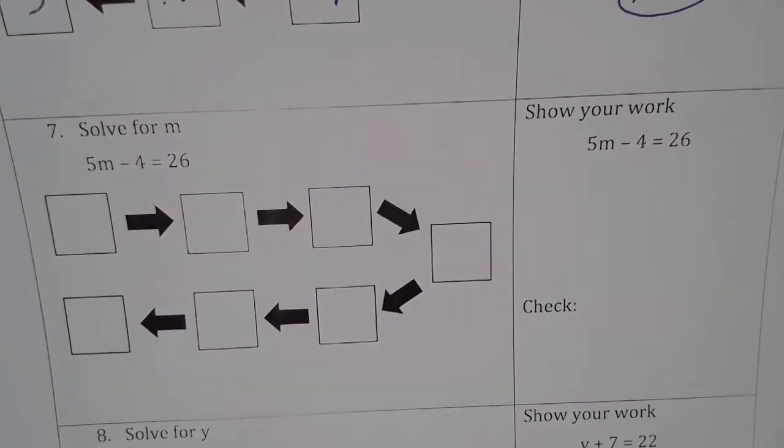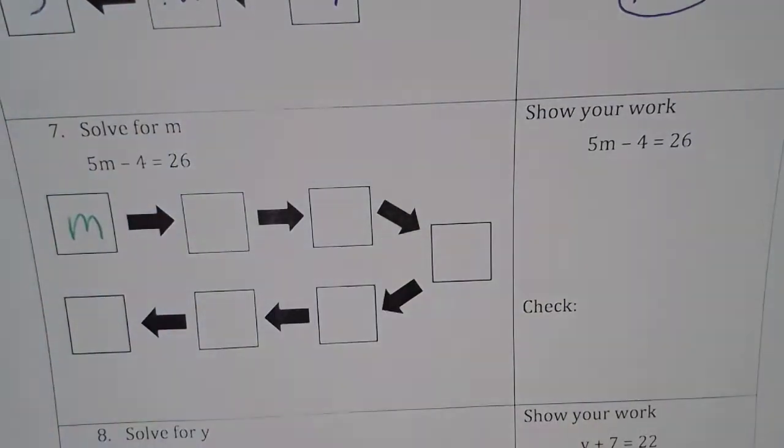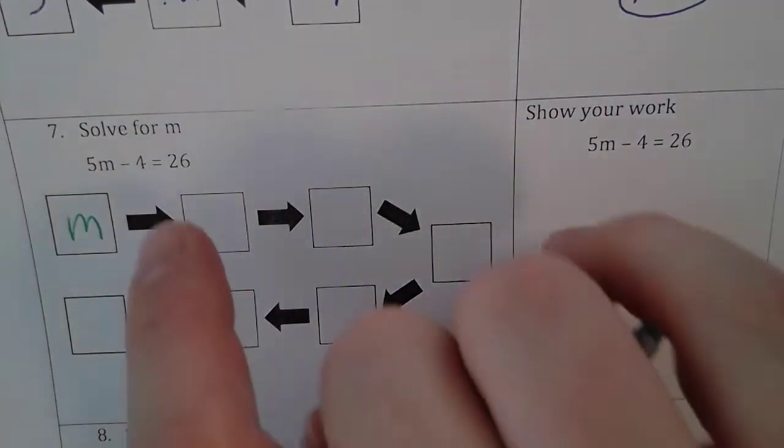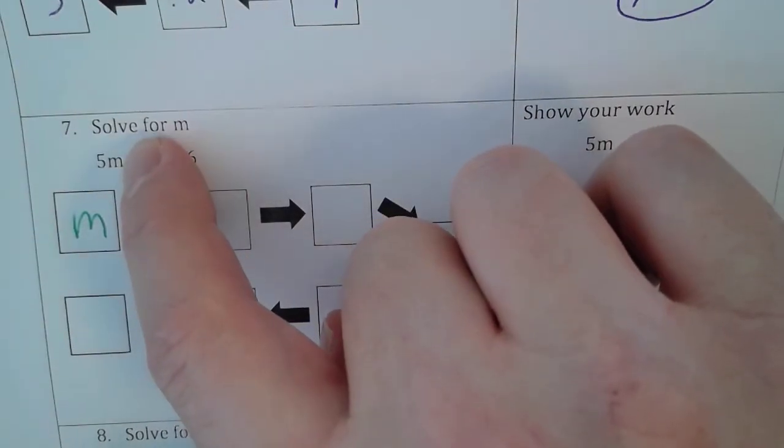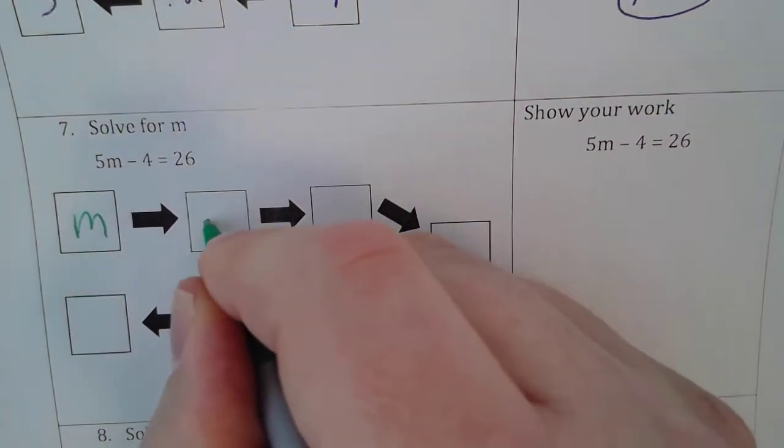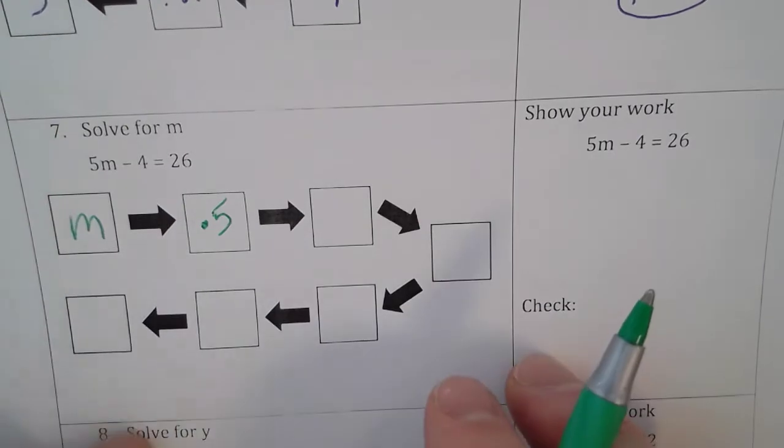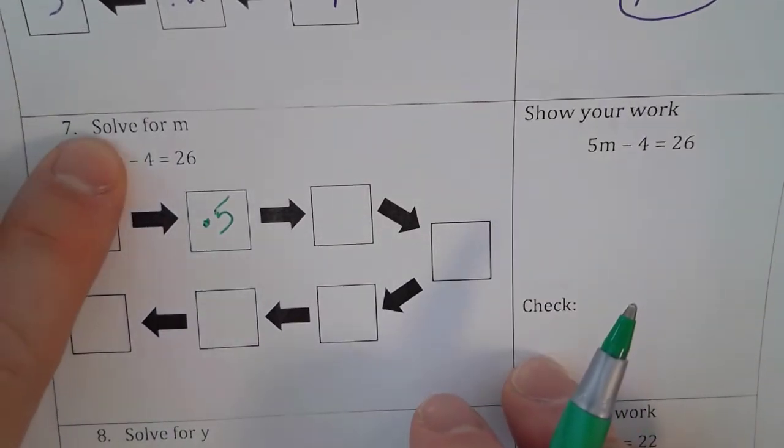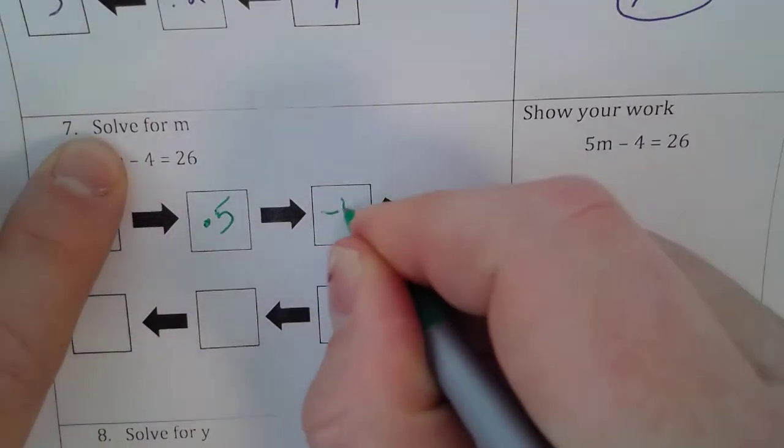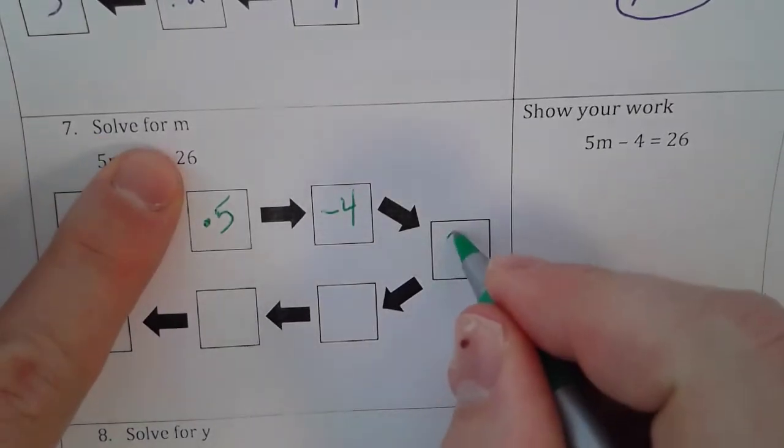Next problem. Our variable here is m, so m is our variable. First thing that's happening to m is that m is being multiplied by 5. The second thing that's happening to that quantity is that we are being subtracted by 4 and our solution to the problem is 26.